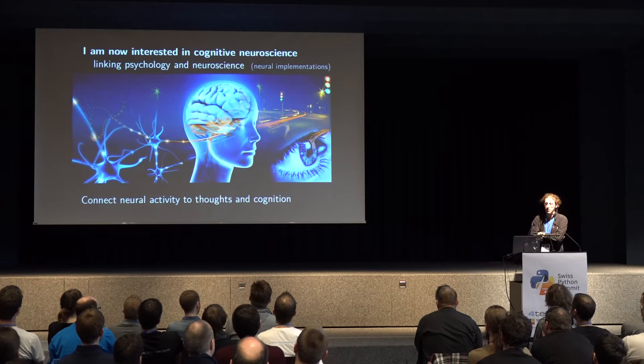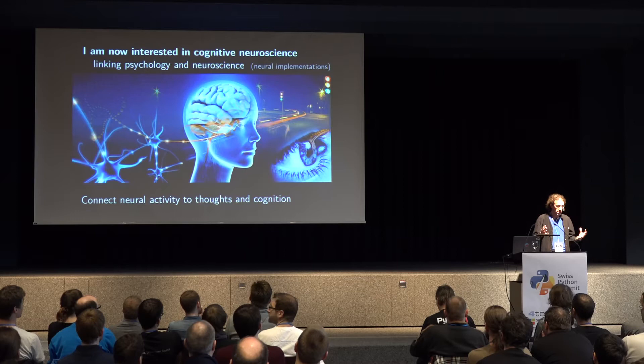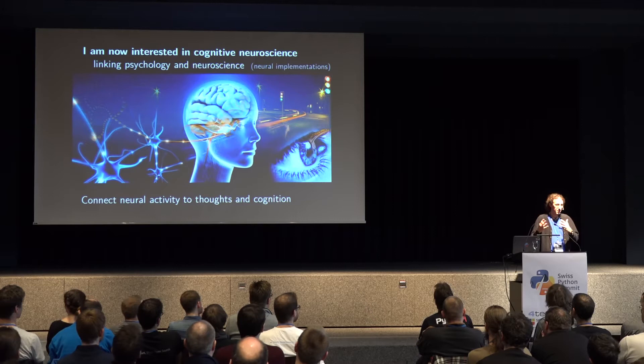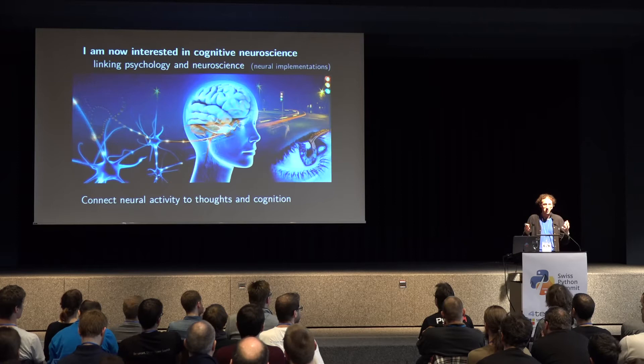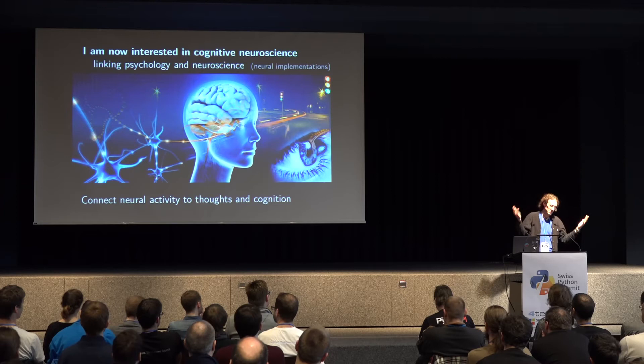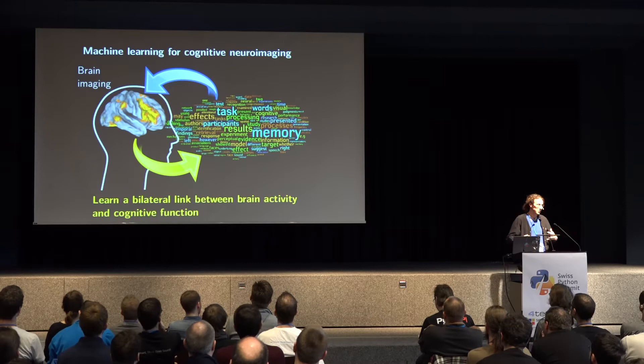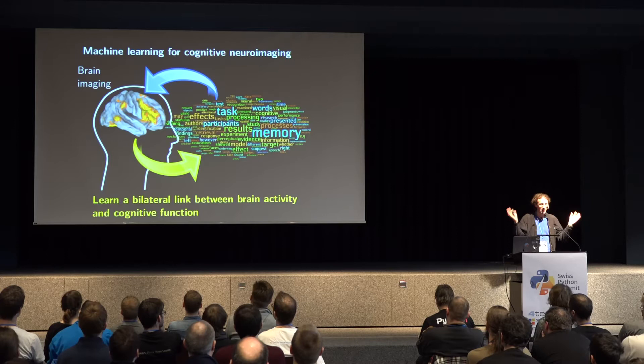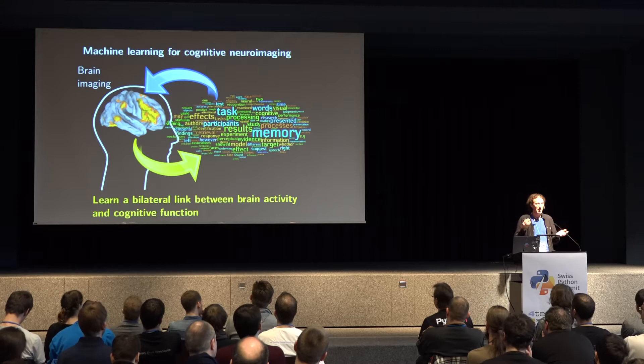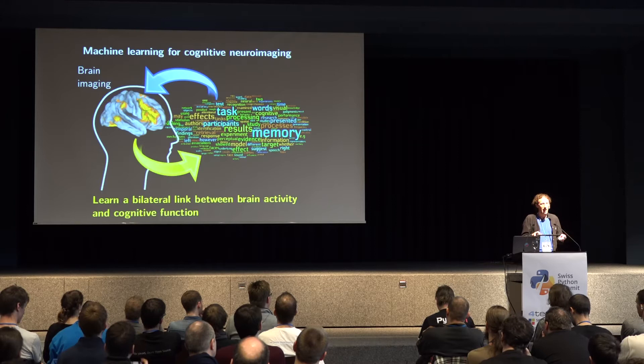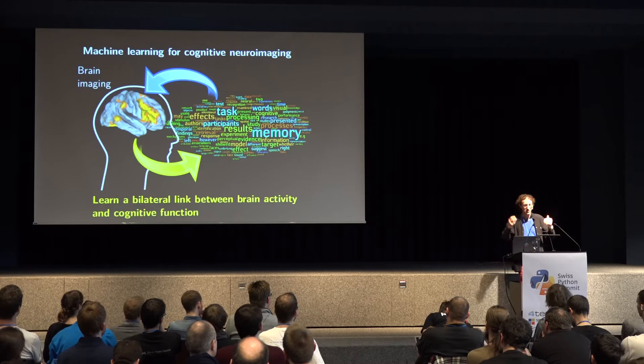Cognitive neuroscience tries to link psychology to neuroscience — by neuroscience we mean neural implementation — and the big picture is to try to link neural activity to thoughts and cognition. Because I'm also a computer scientist, I use computer science to do this. What we do in the lab is we try to learn bilateral links between brain activity captured with brain imaging and some description of cognitive function, which is of course something a bit imprecise.